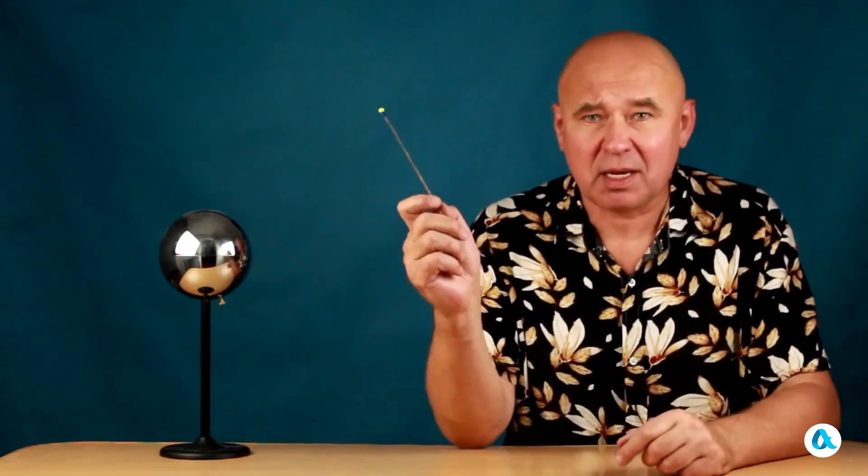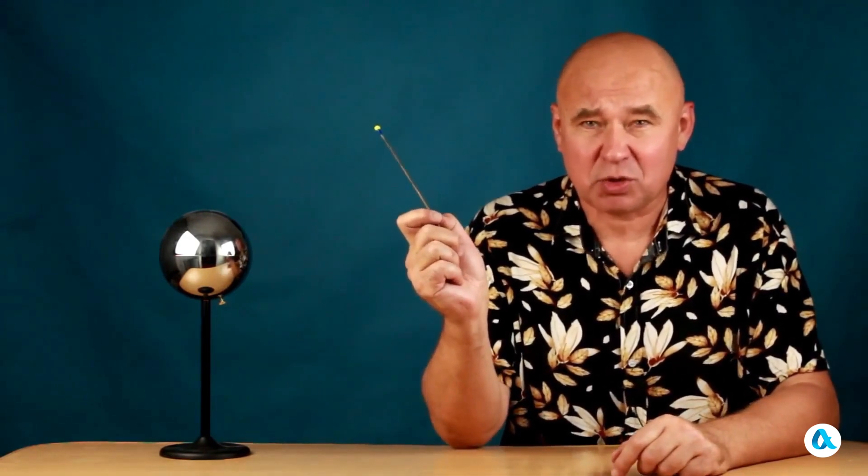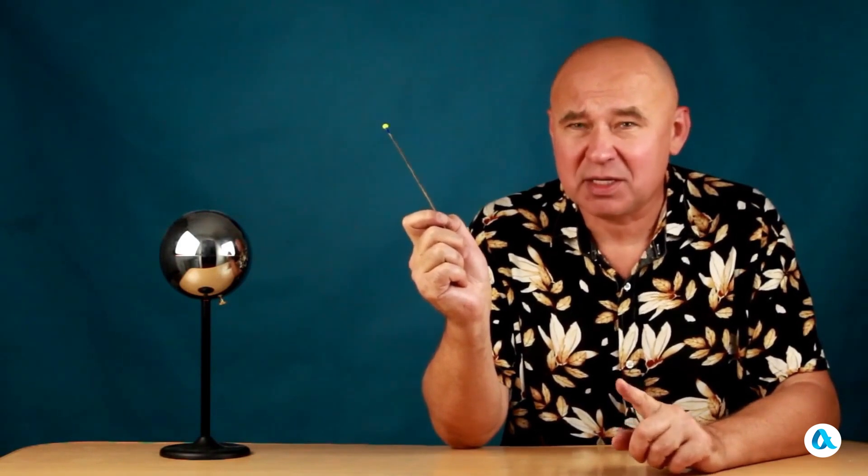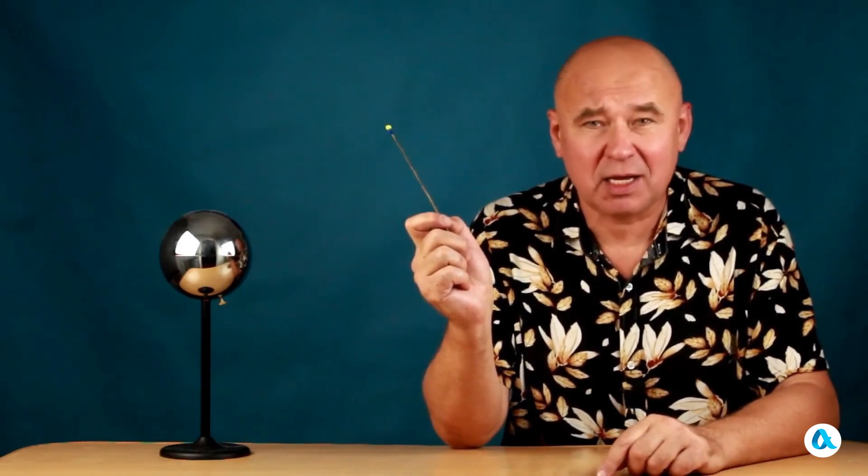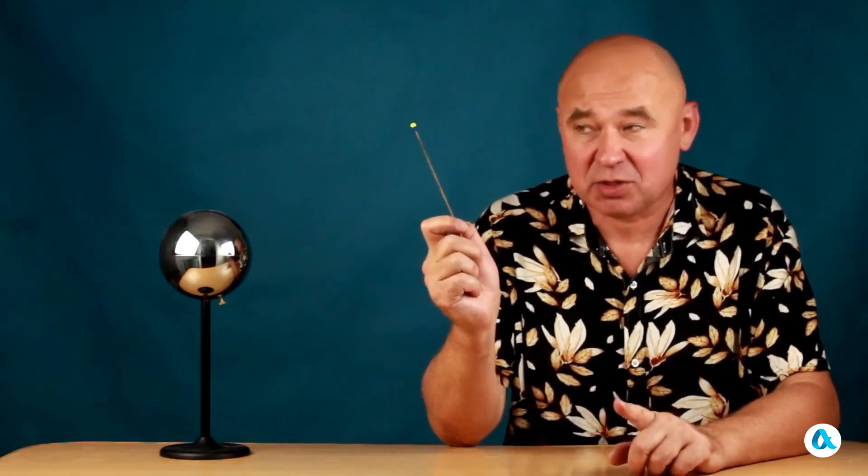To proceed further, I need to introduce the concept of a test charge. Let's imagine that this large sphere is already positively charged, and that this tiny sphere on a stick is also positively charged. The charge on it is so small that I can neglect the effects of electrostatic induction. When I bring this small sphere close to the large sphere, the charges on the large sphere feel it very weakly and do not redistribute across the surface.